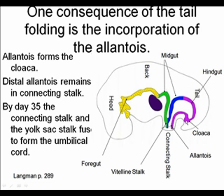At the distal end of the gut tube, the allantois empties into the hindgut to form the enlargement called the cloaca. A portion of the allantois remains with a bit of the vitelline stalk in the region of the connecting stalk — this is at about the end of the fifth week of development, approximately 35 days. You can see the umbilical cord at this stage.